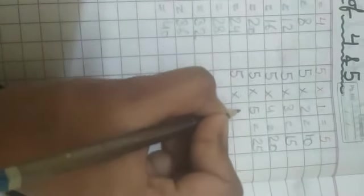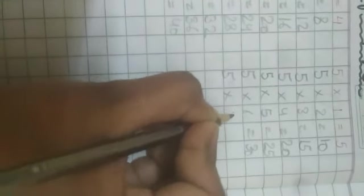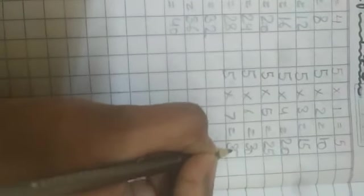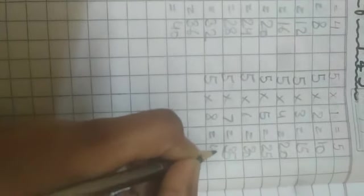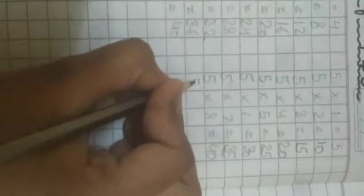5 6's are 30. 5 7's are 35. 5 8's are 40. 5 9's are 45.